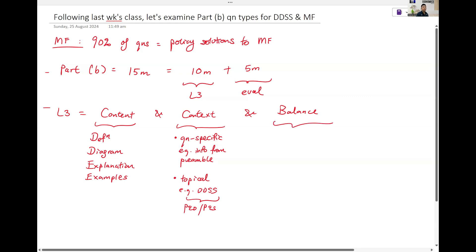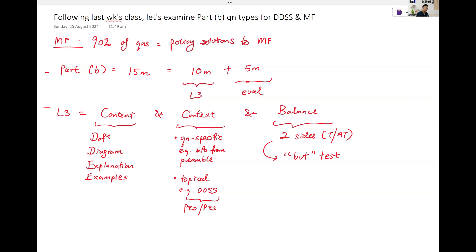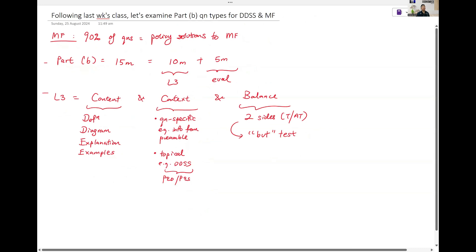Balance. Balance very simply means two sides. It means your thesis and antithesis. If you really don't know why it's balanced, you try to do this thing called a BUT test. You ask yourself, how can I start this paragraph with the word BUT? If you cannot, then probably that is not an antithesis. That is still a continuation of your thesis.